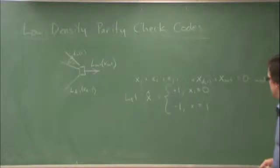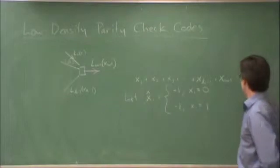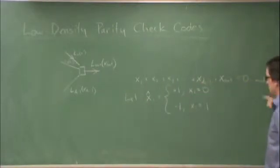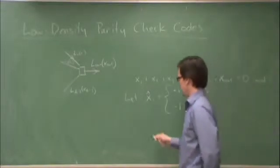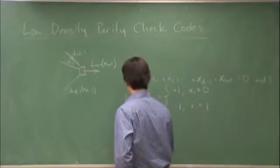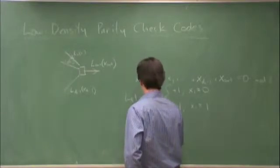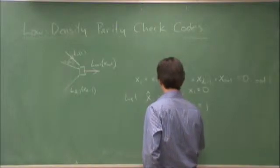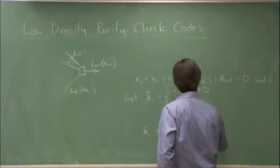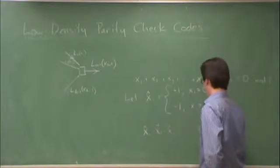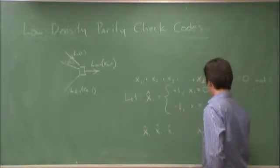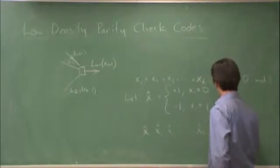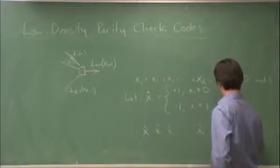So in that case, it turns out this constraint that x1 plus x2 plus x3 plus and so on equals 0 mod 2 is equivalent to x1 hat times x2 hat times x3 hat times and so on, x1 times xdc minus 1 hat times x out hat is equal to 1.